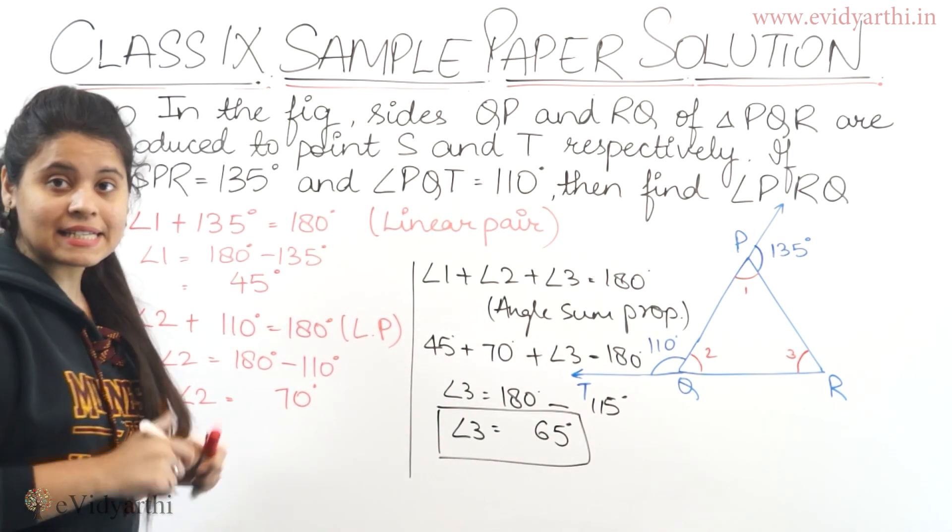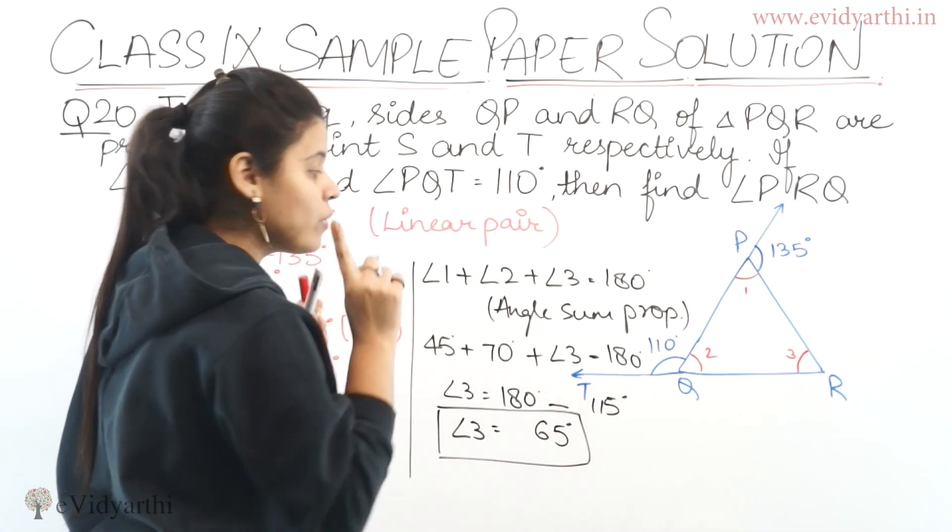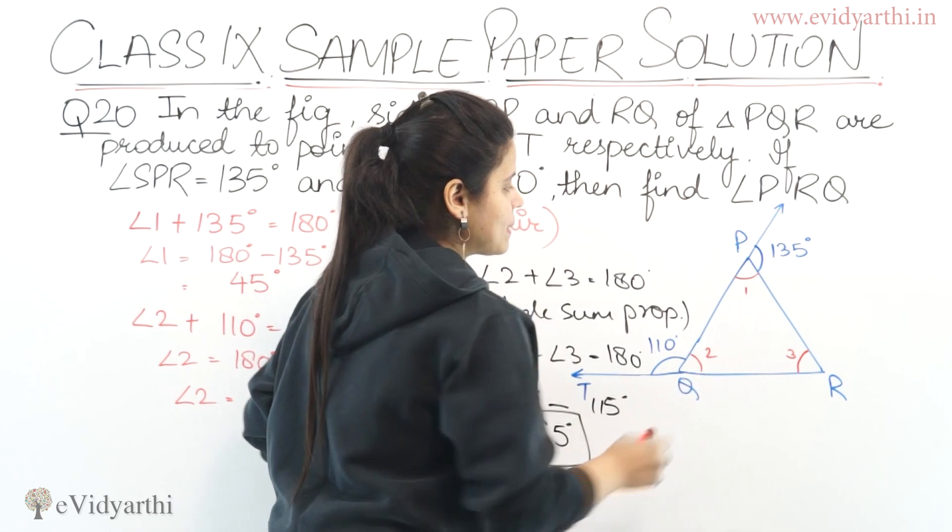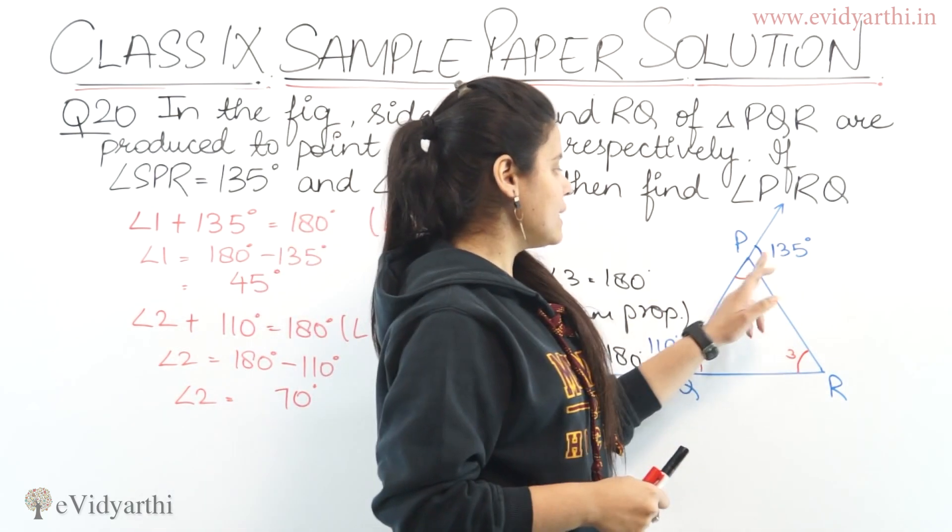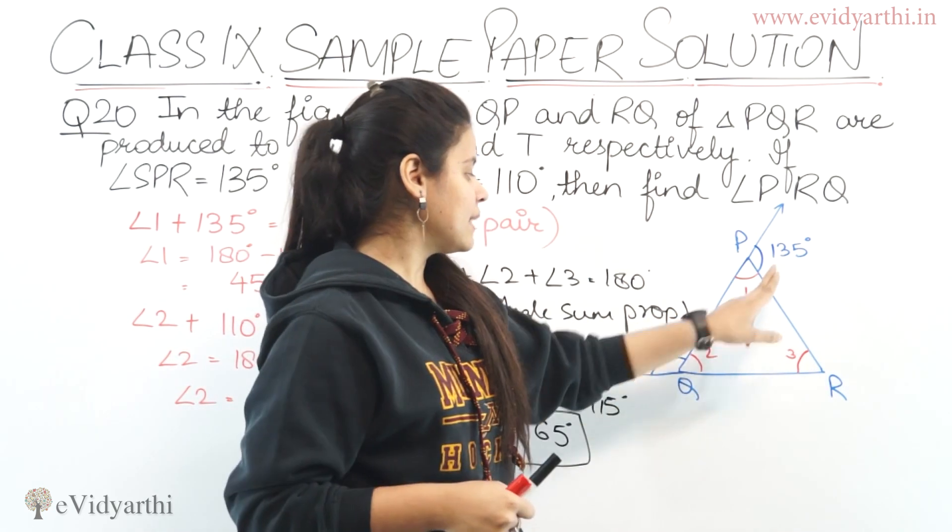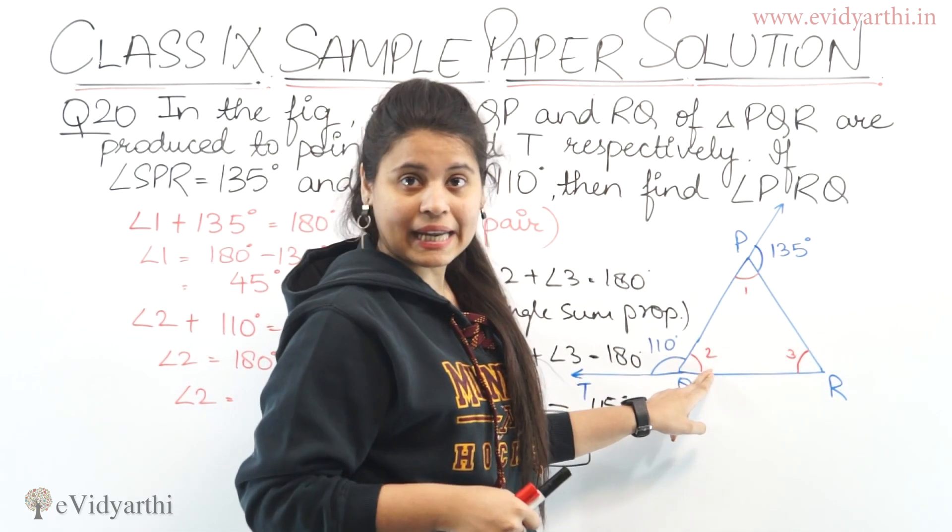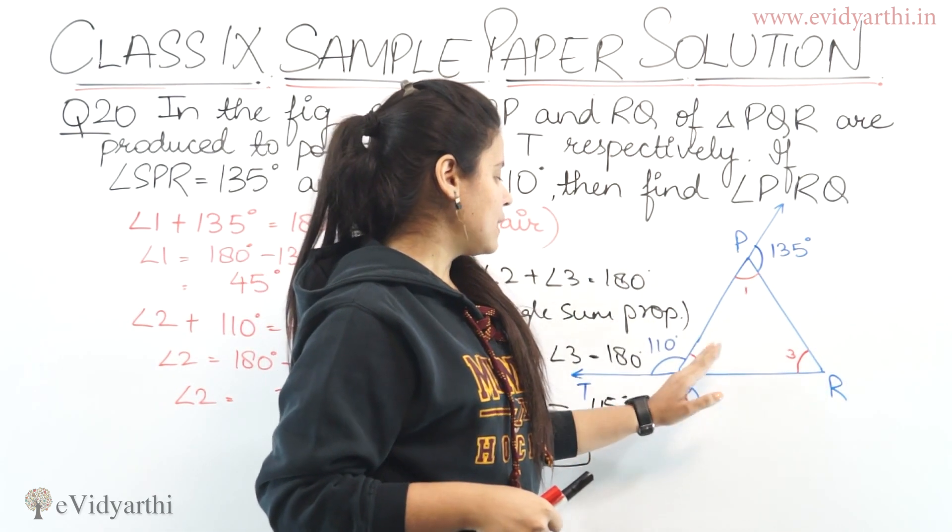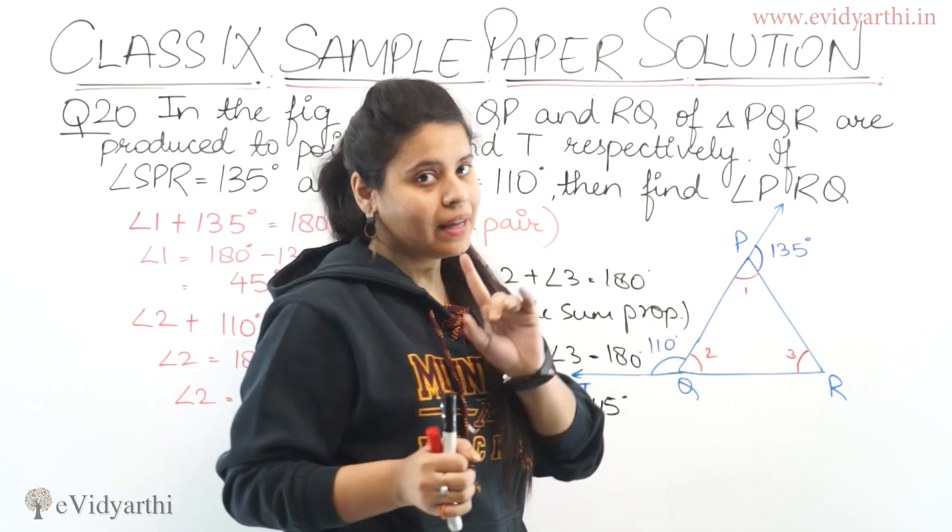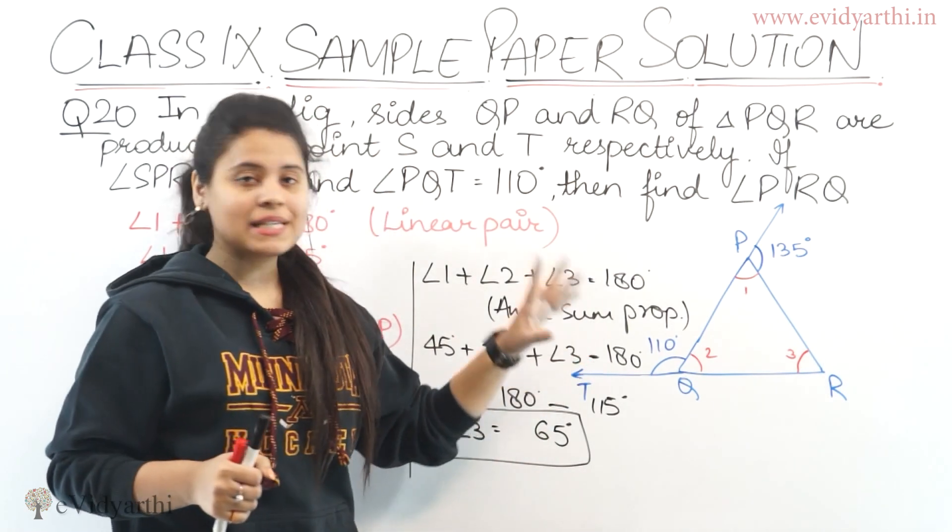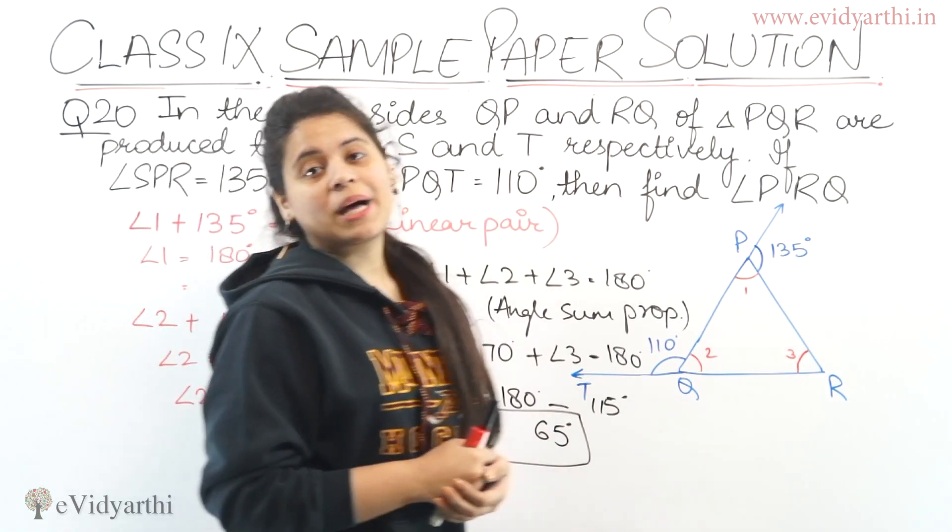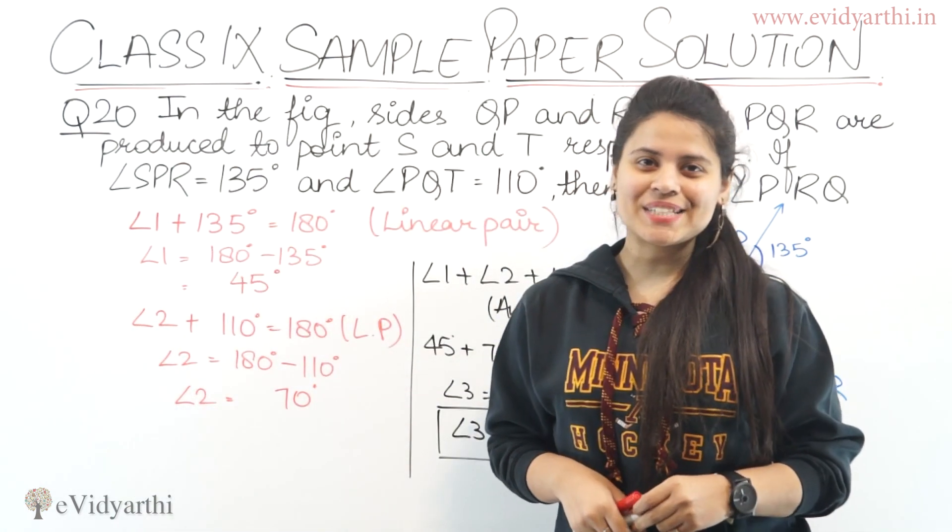Angle 3 we had to find and that is 65 degrees. Also, one more thing you can do here is, you can see this is an exterior angle. So you can also write angle 2 plus angle 3 will be equal to 135 degrees. Both methods are correct, here we used angle sum property, and you can also use exterior angle property for this question. So this was question number 20, let's move to the next question.